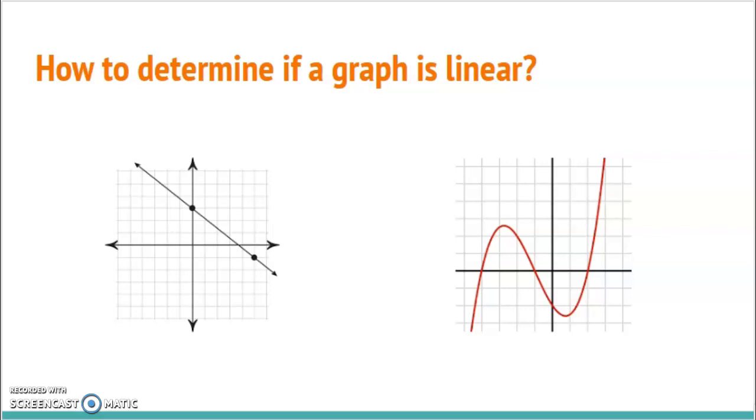First things first, we need to know how to determine if a graph is linear or not. Looking at these two graphs up here, the first thing we need to know is that linear has the word line right there in it. So we are looking for a straight line, and hopefully you said the one on the left has a straight line.